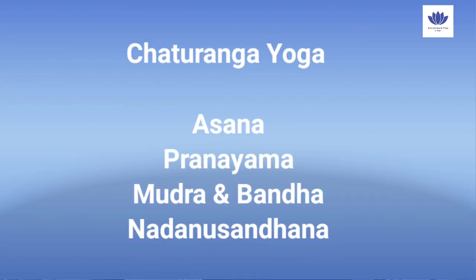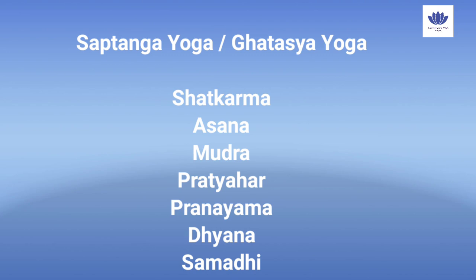A quick refresher: Hatha Yoga Pradipika is written by Sage Swatmarama. The yogic structure suggested in it is known as Chaturanga Yoga, with four limbs: asana, pranayama, mudra and bandha, and nada anusandhana. Gheranda Sahita is a collection given by Sage Gheranda to his disciple Chanda Kapali. Its structure is known as Saptanga Yoga or Ghatsa Yoga, with seven limbs: shatkarma, asana, mudra, pratyahara, pranayama, dhyana, and samadhi.